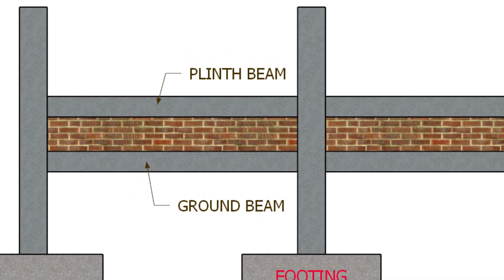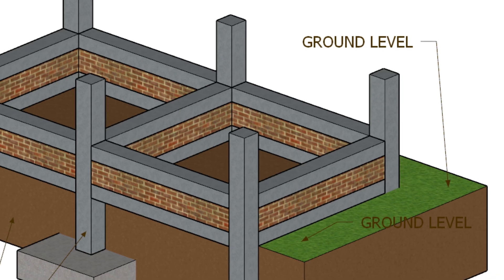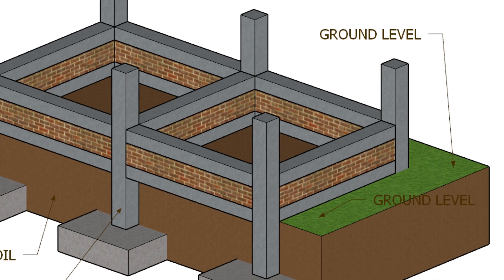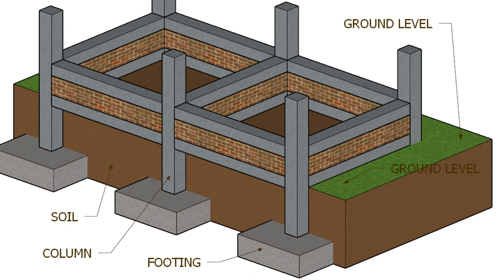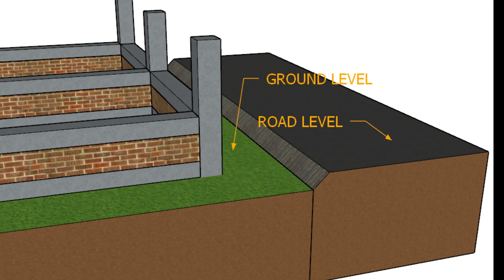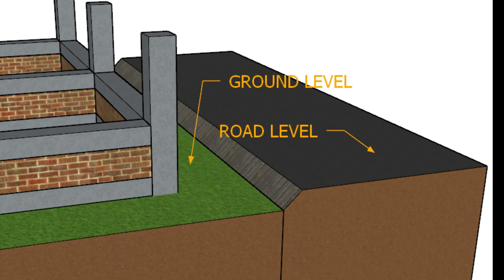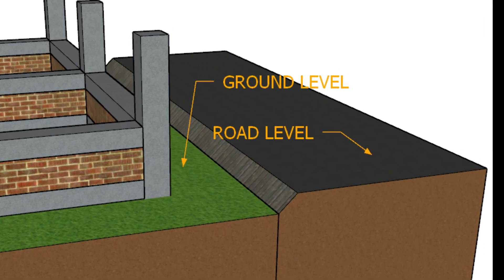Let's begin with a basic scenario. Imagine your ground level at the site, and just below that lies your foundation or footing. In many real-world cases, the road level outside the plot is higher than your ground level, sometimes by one foot or even more. So during construction, you'll need to raise the plinth level above the road level, usually by one and a half to two feet, to avoid future problems.